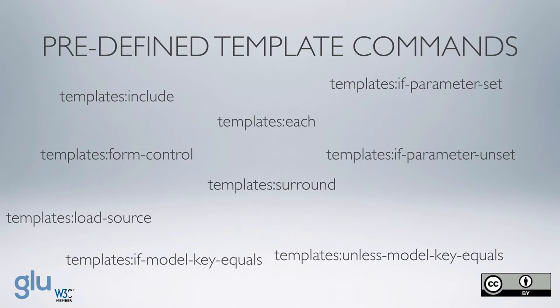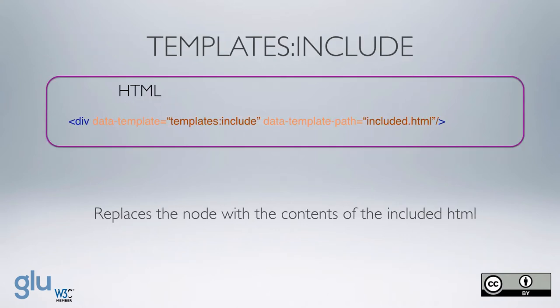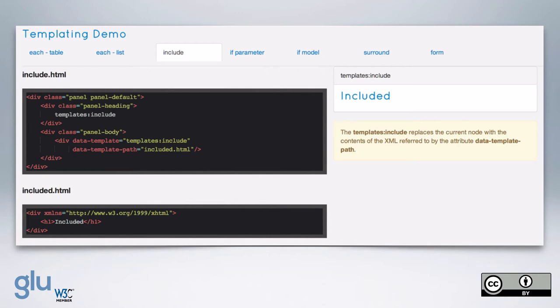Here are the predefined template commands: include, each, if-parameter-set, if-parameter-unset, if-model-key-equals, unless-model-key-equals, template:surround, form-control, and load-source. The templates:include command replaces the node with the content of the included HTML. It must be noted that the data-template path is relative to the application root — so if the app is 'foo', that would be /db/apps/foo. Here's an example where we include 'included.html', which has an h1 with the word 'included', and you can see that on the right.